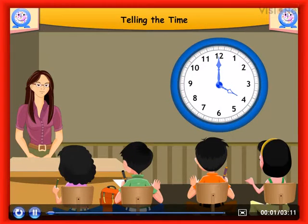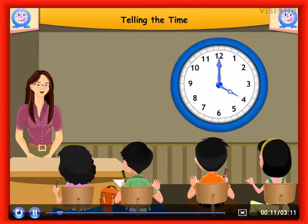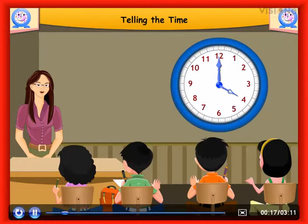Telling the time. Look at the clock. There are two hands on the clock. The long hand is the minute's hand and the short hand is the hour hand. The face of a clock has the numbers from 1 to 12 on it.